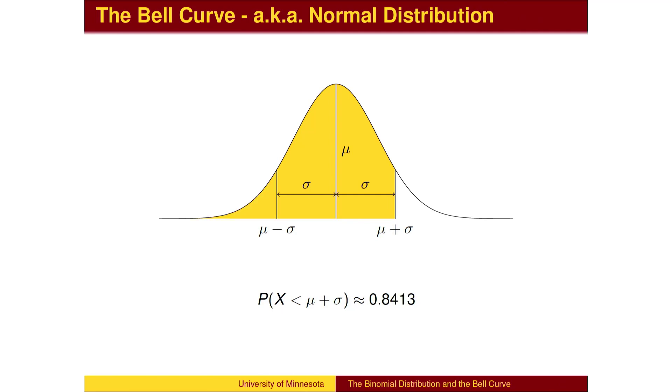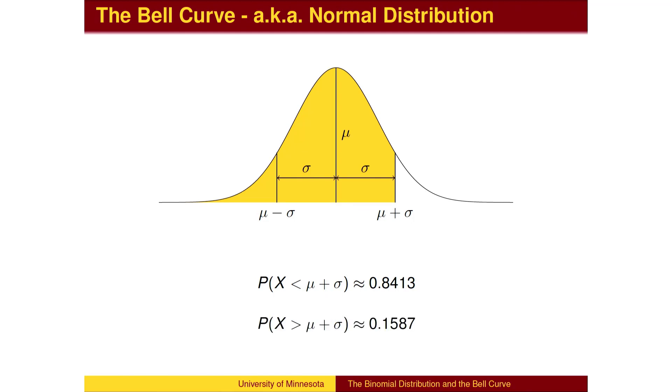If we include the left tail, 84% of the population falls below one standard deviation above the mean. This implies that the remaining 15.87% of the population is more than one standard deviation above the mean.